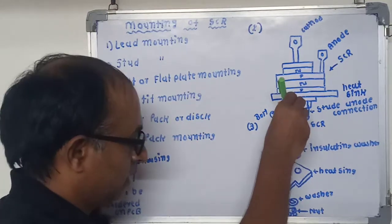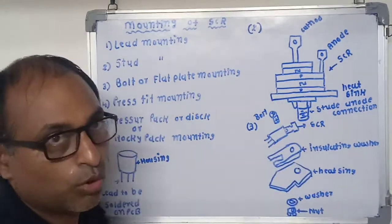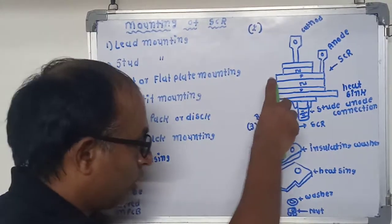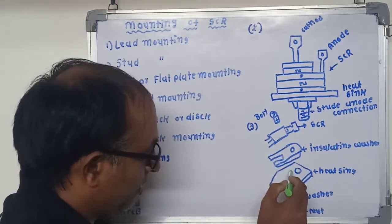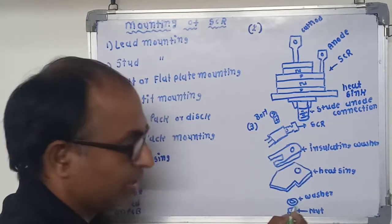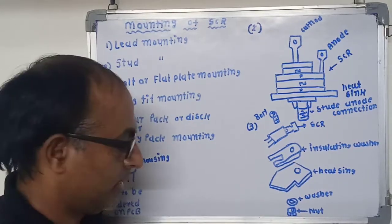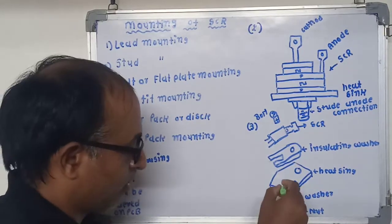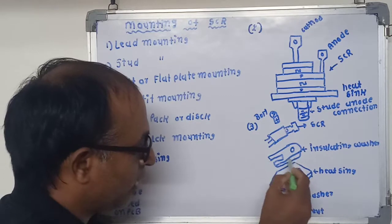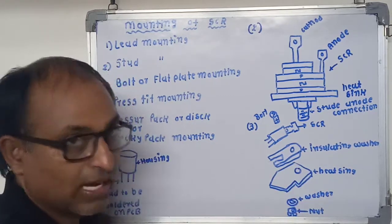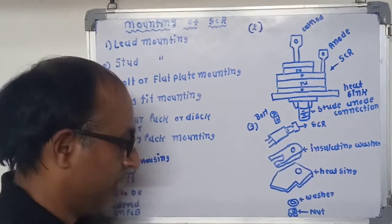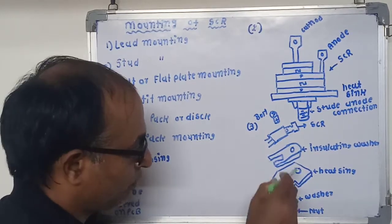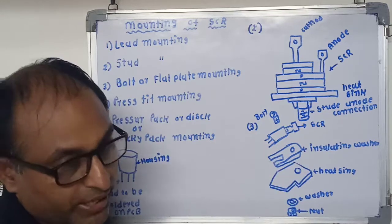Bolts are placed through these holes in order to attach SCR and heat sink with nuts. In case the SCR is to be insulated from the heat sink, thin insulating layer of mica or PTFE washer is used between them. It is used for small and medium ratings.